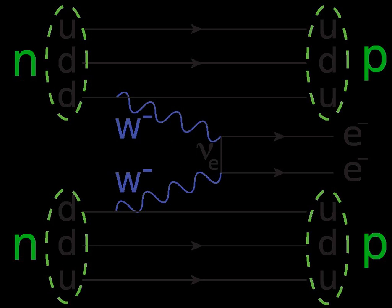In nuclear physics, double beta decay is a type of radioactive decay in which two neutrons are simultaneously transformed into two protons, or vice versa, inside an atomic nucleus.